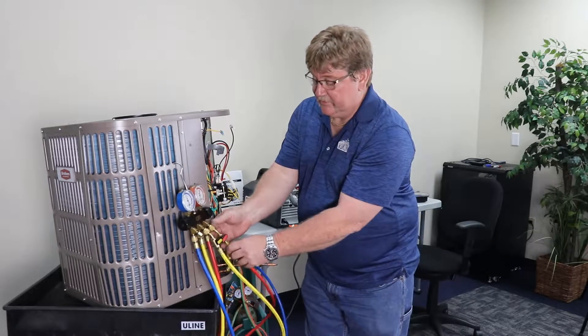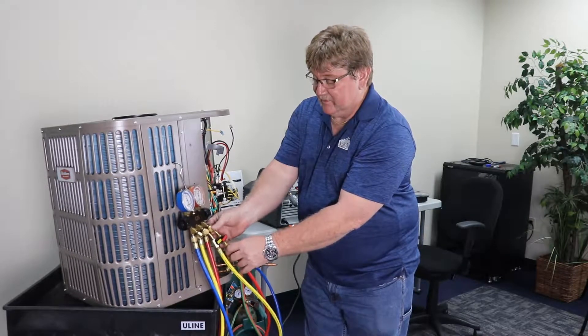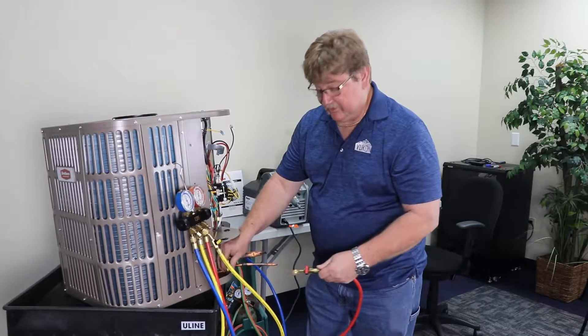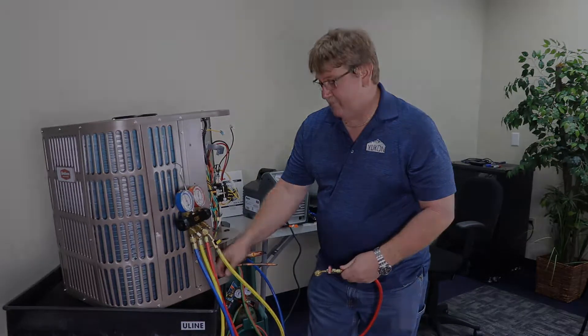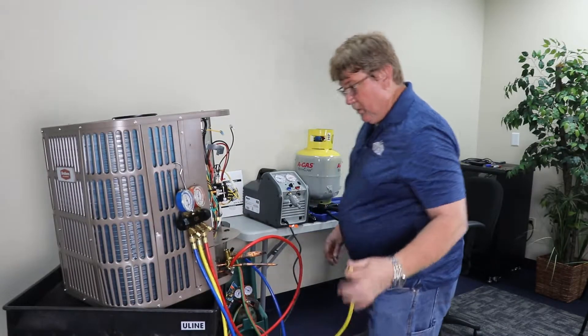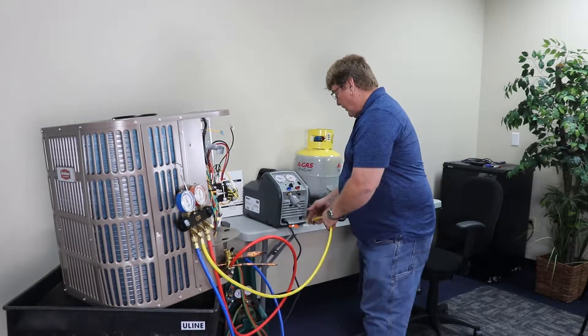The red hose, high side line, sometimes referred to as the liquid line, goes on the small line or the liquid line. And then your center hose will go up to the pre-filter onto your machine.